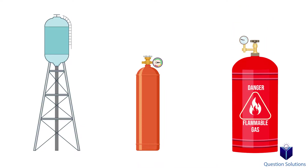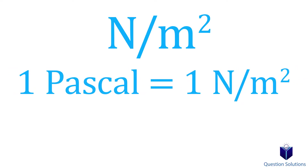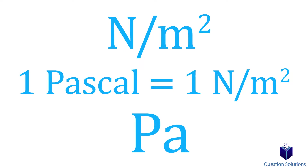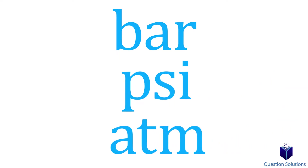Since pressure is force per unit area, the units will be newtons per square meter. This is also called a pascal, represented with the letters Pa. There are also other units of pressure that might come in handy, such as bar, psi, and more.